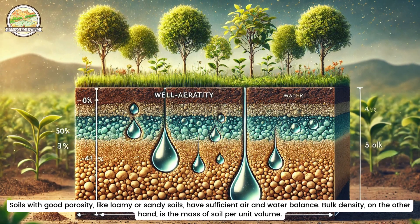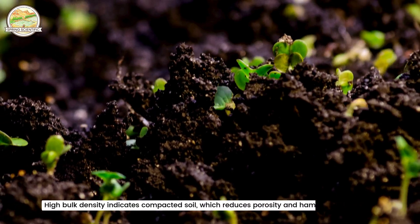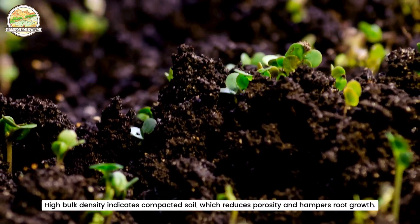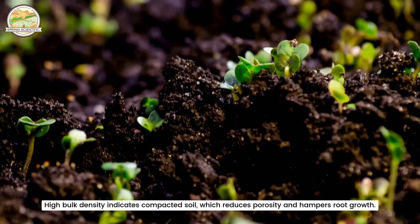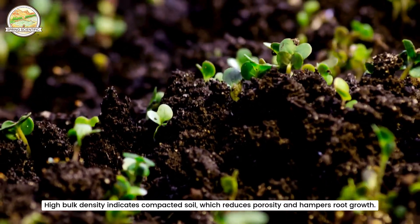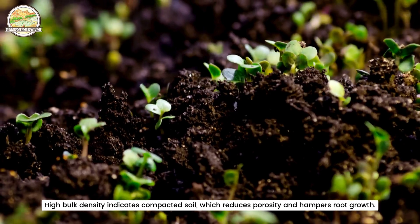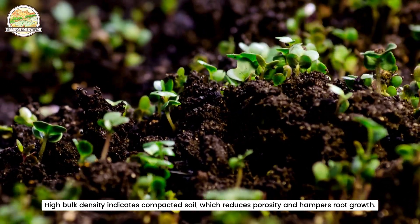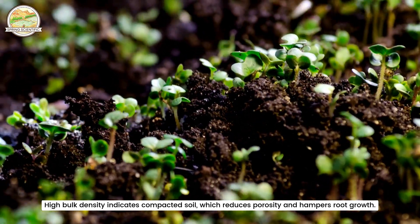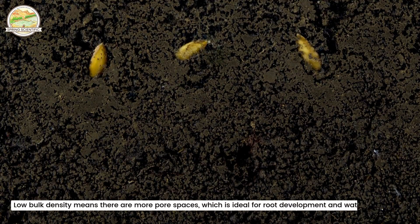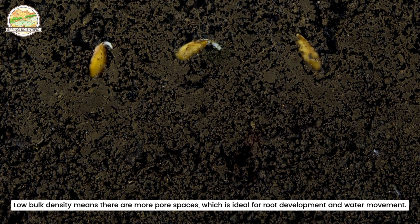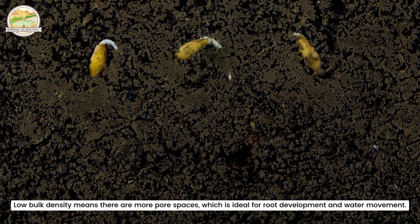Bulk density, on the other hand, is the mass of soil per unit volume. High bulk density indicates compacted soil, which reduces porosity and hampers root growth. Low bulk density means there are more pore spaces, which is ideal for root development and water movement.